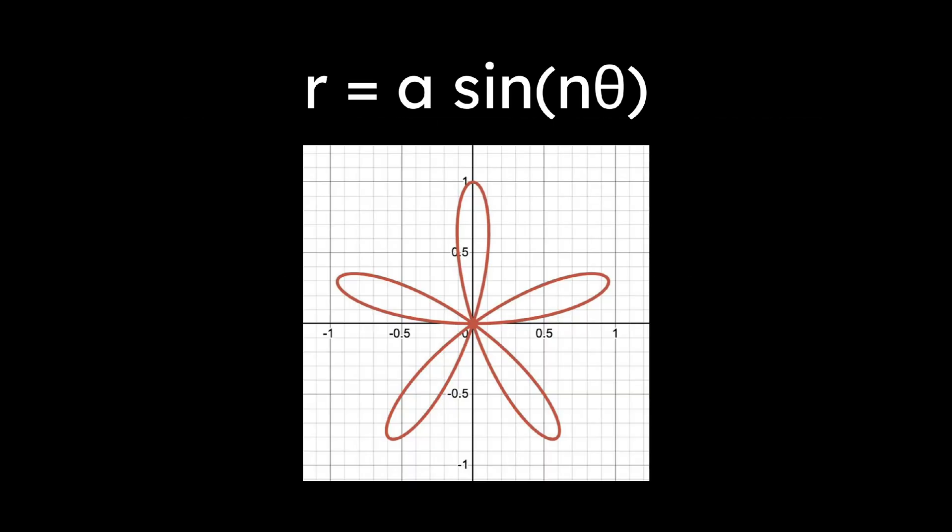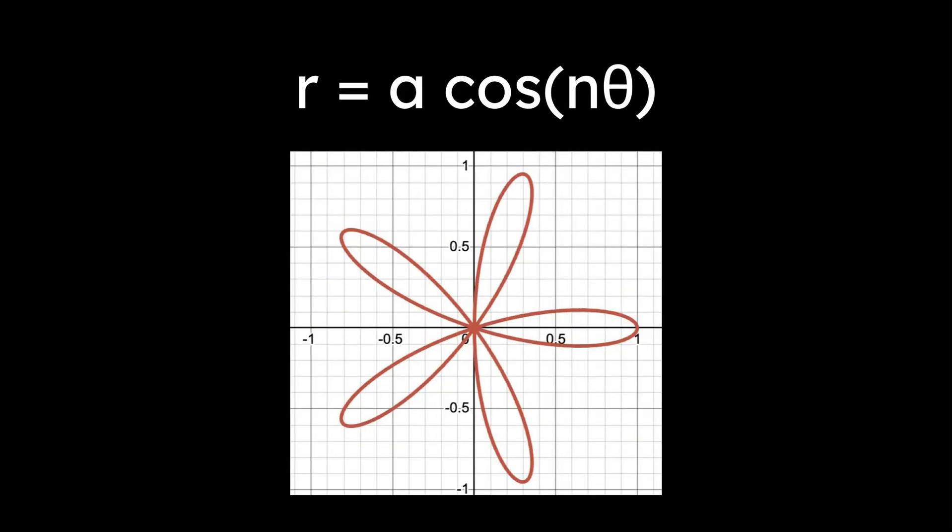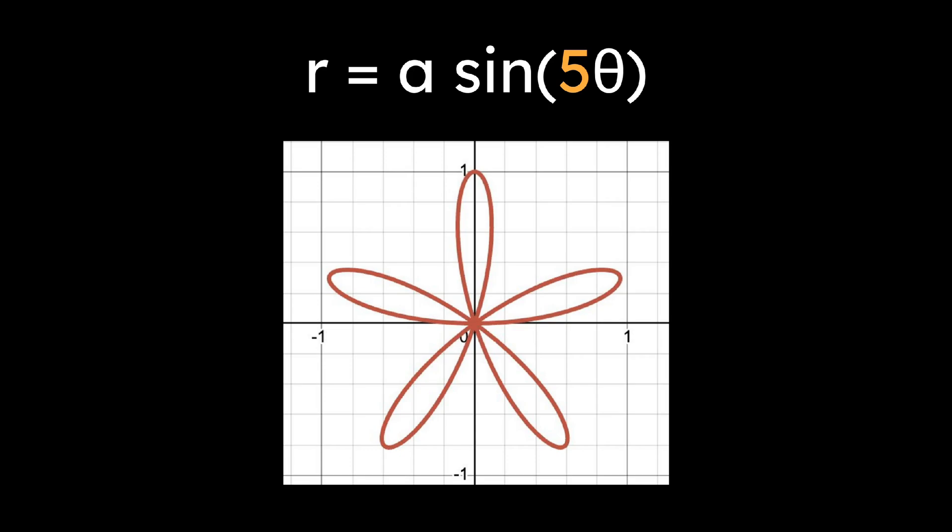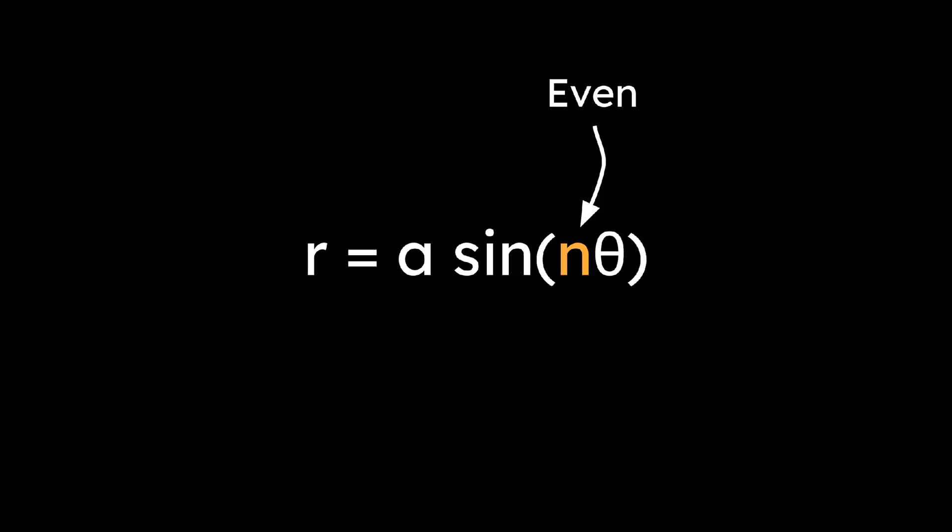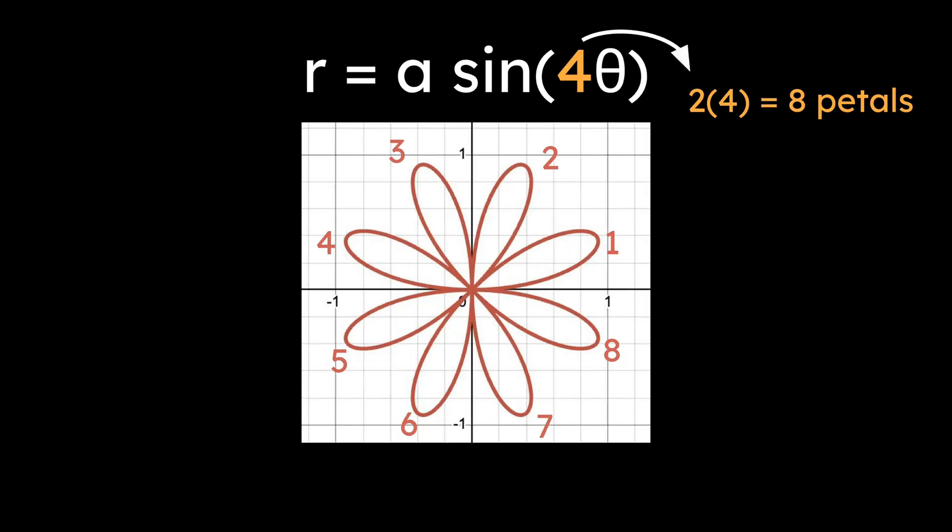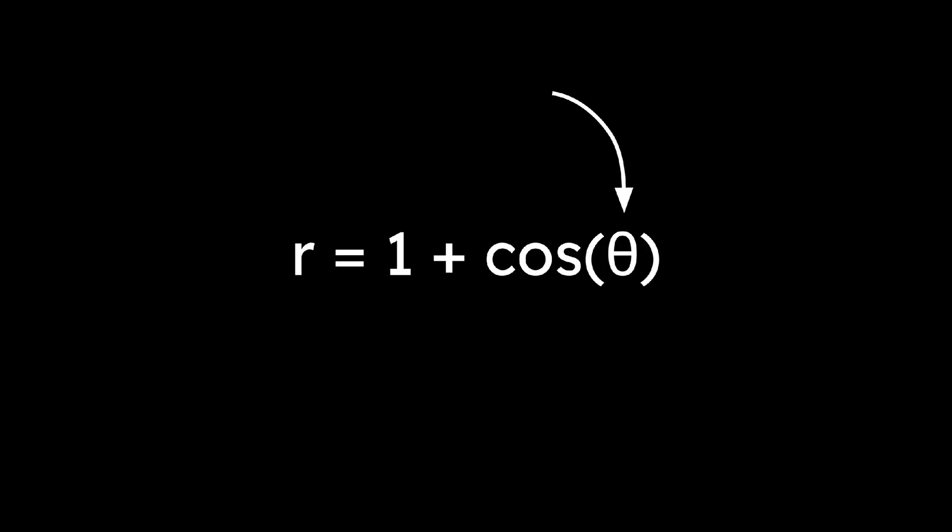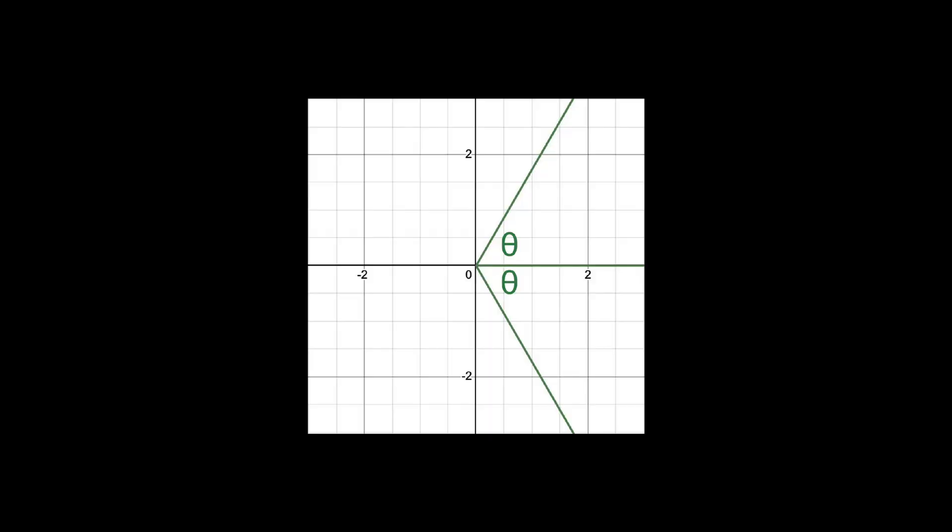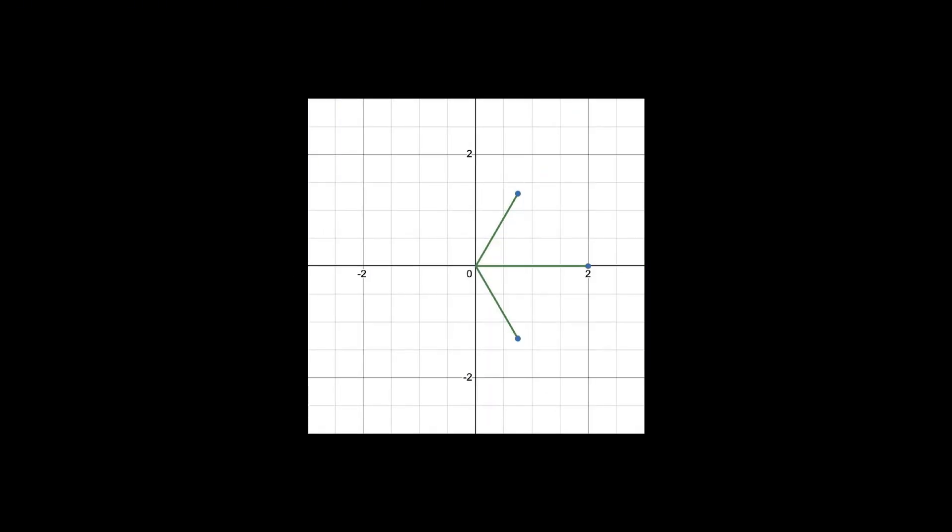Rose curves are of the form r equals a sine n theta, or a cosine n theta. If n is odd, the graph has n petals, whereas if n is even, there are 2n petals. To plot a polar curve, plug in values of theta, rotate to each angle, draw the corresponding radius, and connect points.